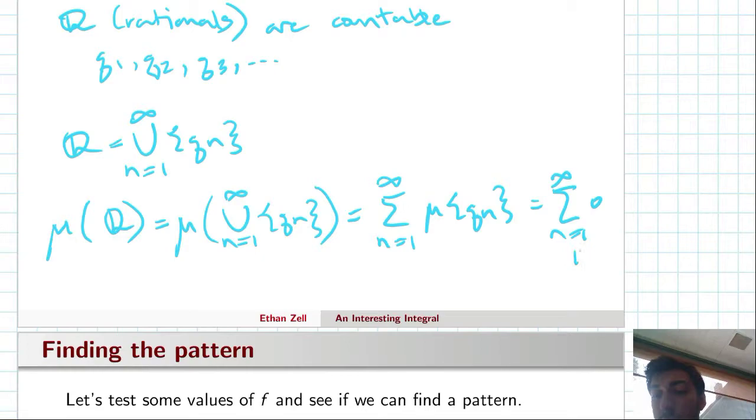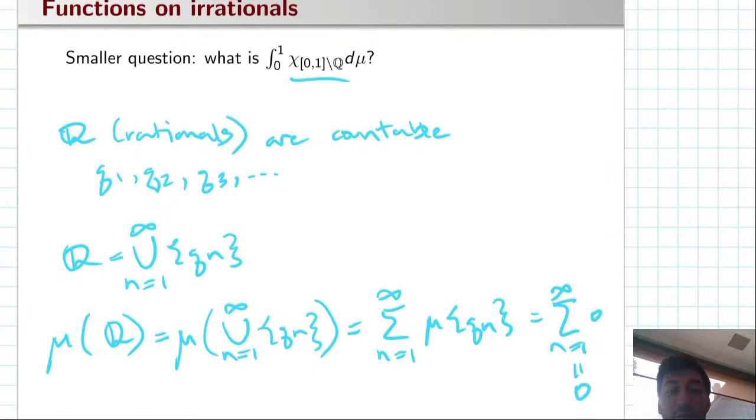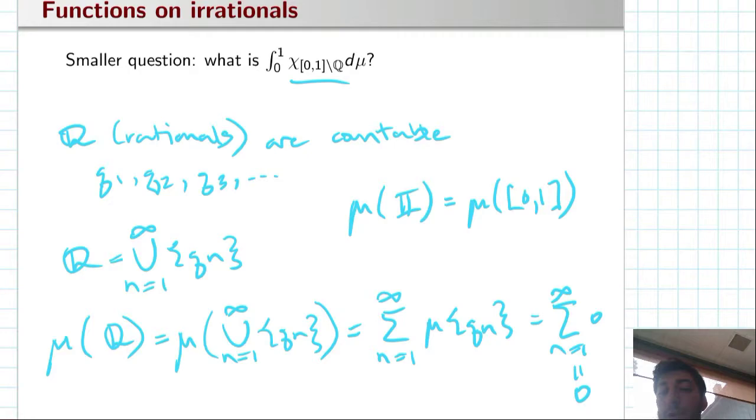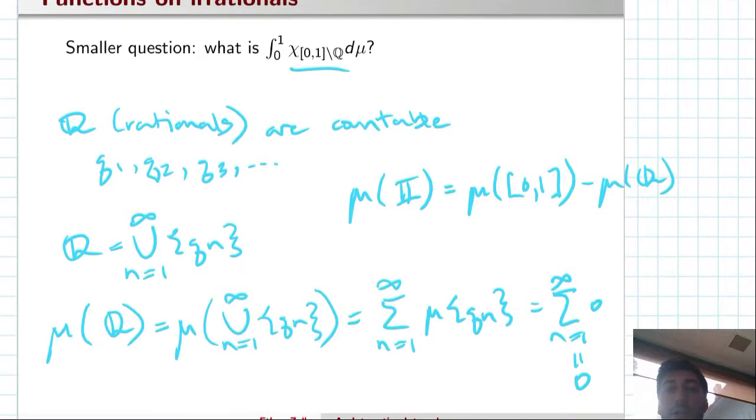So we know that the measure of the rational numbers is zero. And we know that the measure of the irrational numbers is equal to the measure of the interval. I'm only considering the rationals and irrationals on the unit interval because that's the relevant part to our problem.